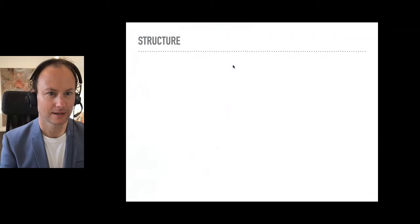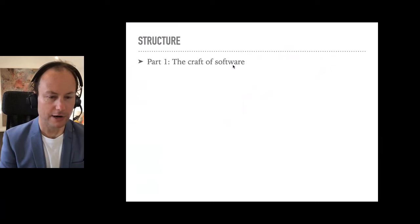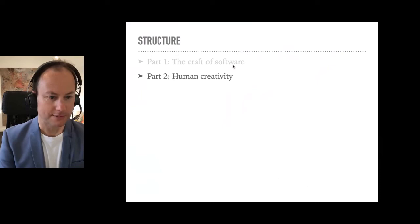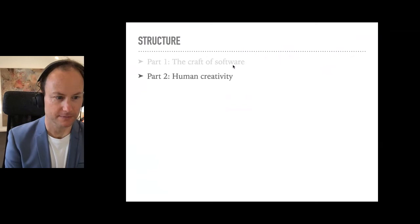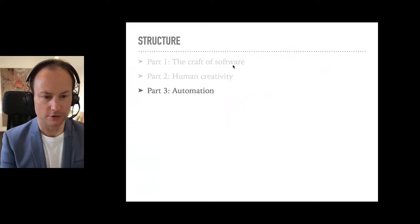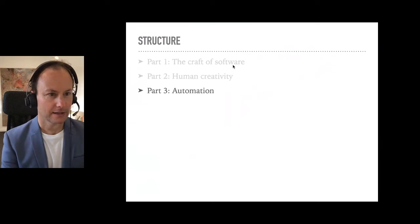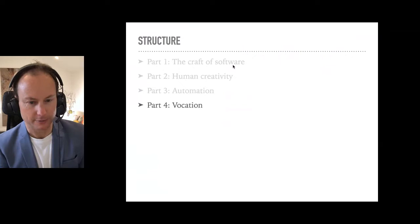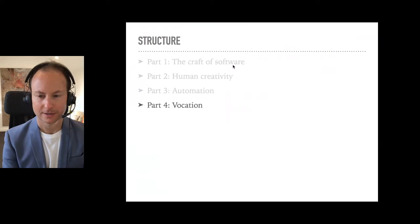Here's the structure. Part one: I'm going to tell you about the craft, or the art, of programming and of software more generally. In part two, I'm going to describe some research into human creativity — what conditions engender it and how to foster it. Part three is about automation and the effects of automation on the march of progress of our civilisation and where this is taking us. And in part four, I'll describe some thoughts about vocation — the idea that we all have inside us a calling which we can tap into for a more fulfilling life. Creativity is an important part of nurturing and listening to that calling.